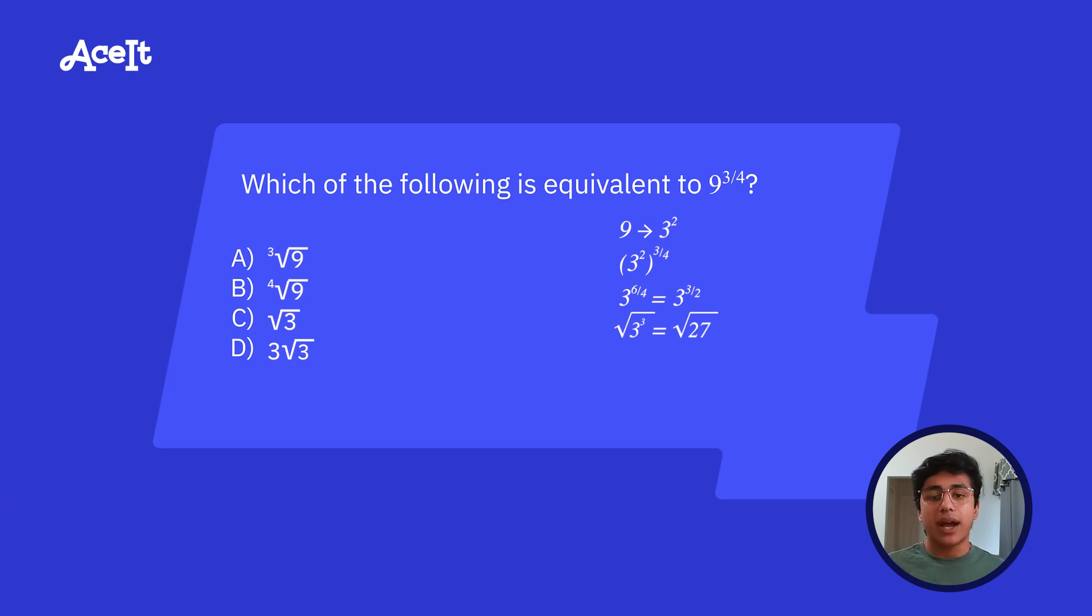Now it's just a matter of simplifying the radical. You probably learned how to do this in your algebra class, but essentially the goal is to find numbers that are multiples of the square root of 27. In this case, we know that the square root of nine times the square root of three is the square root of 27. And we also know that the square root of nine is three. So that can leave us with three times the square root of three, which is answer choice D.